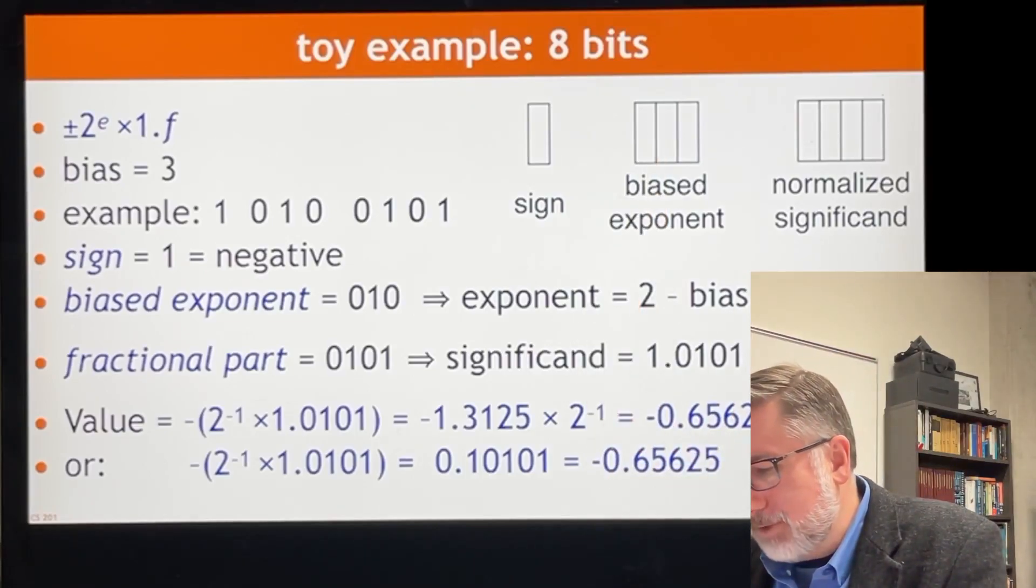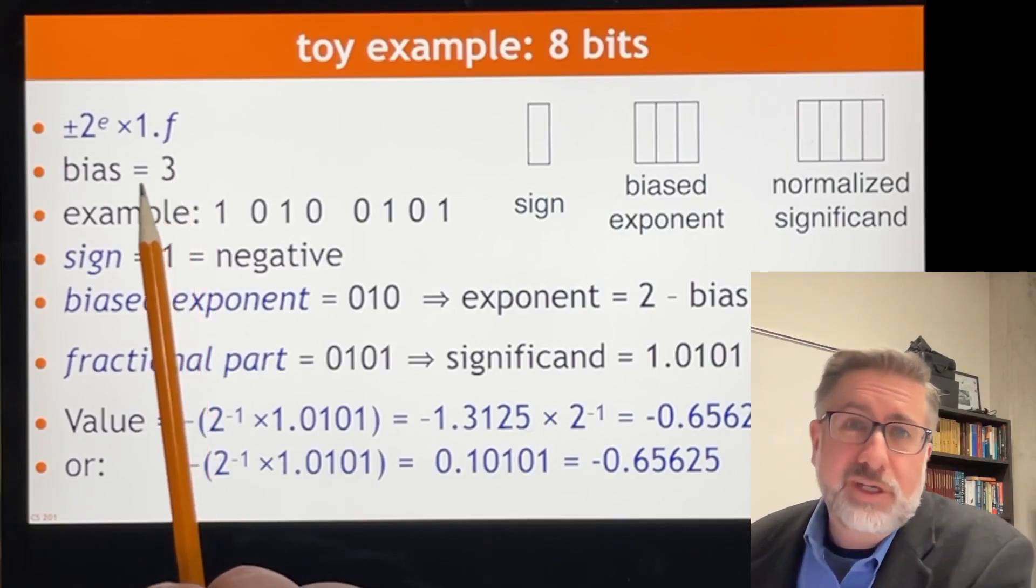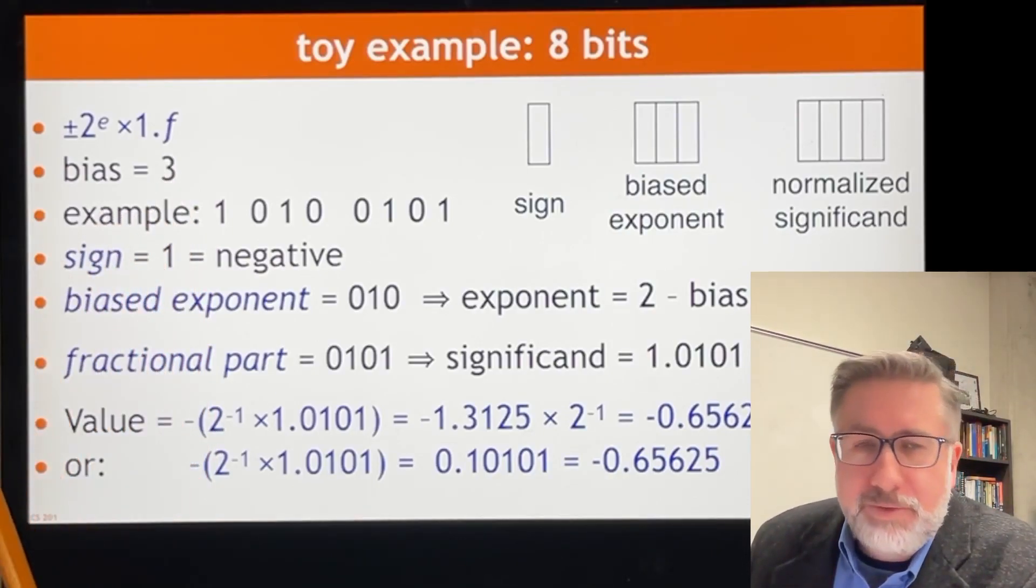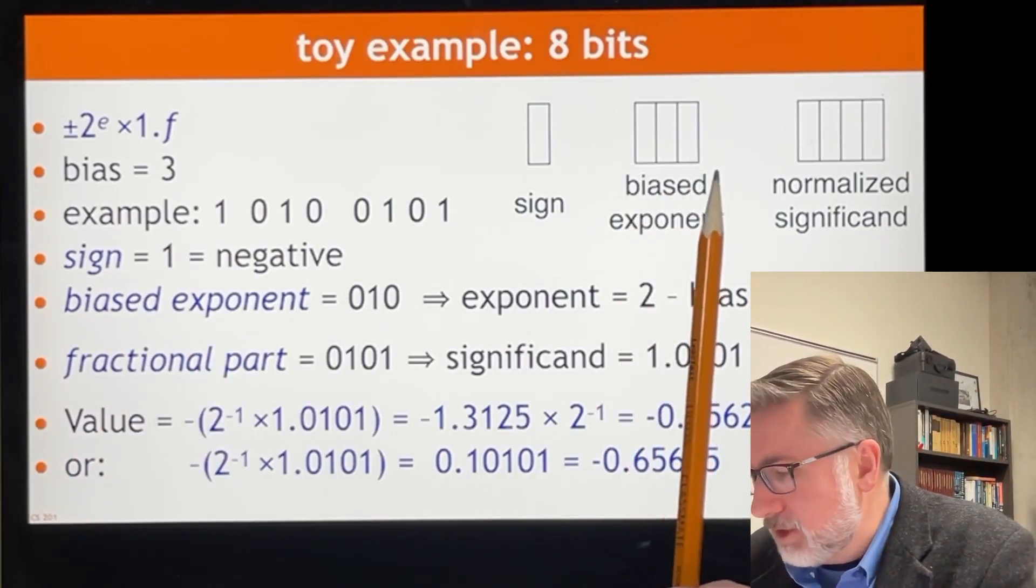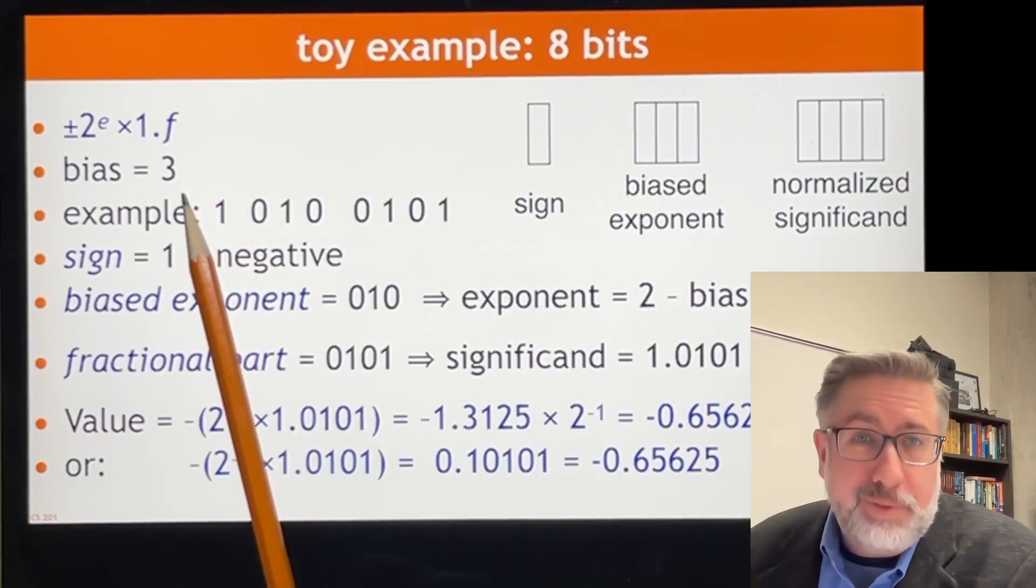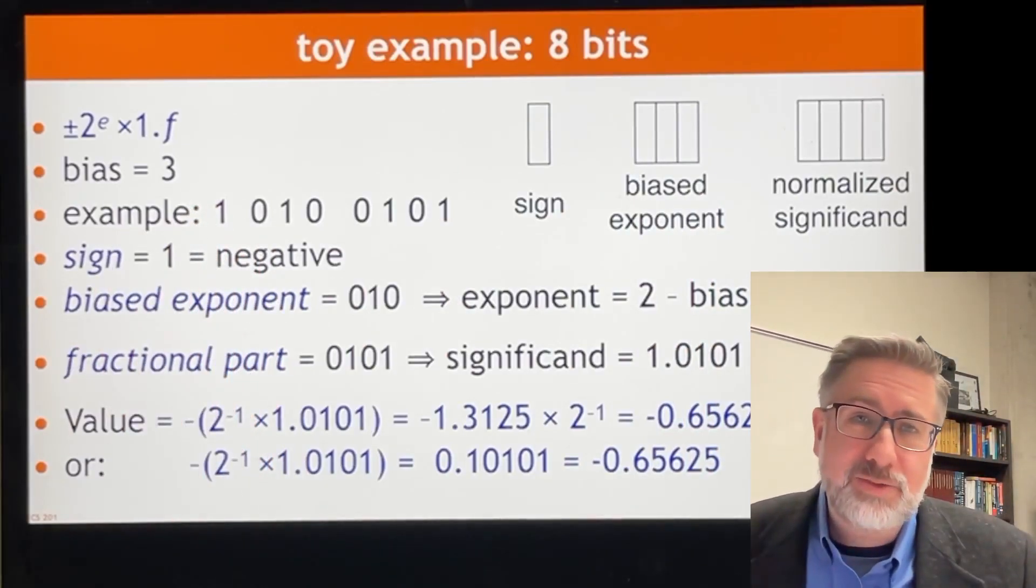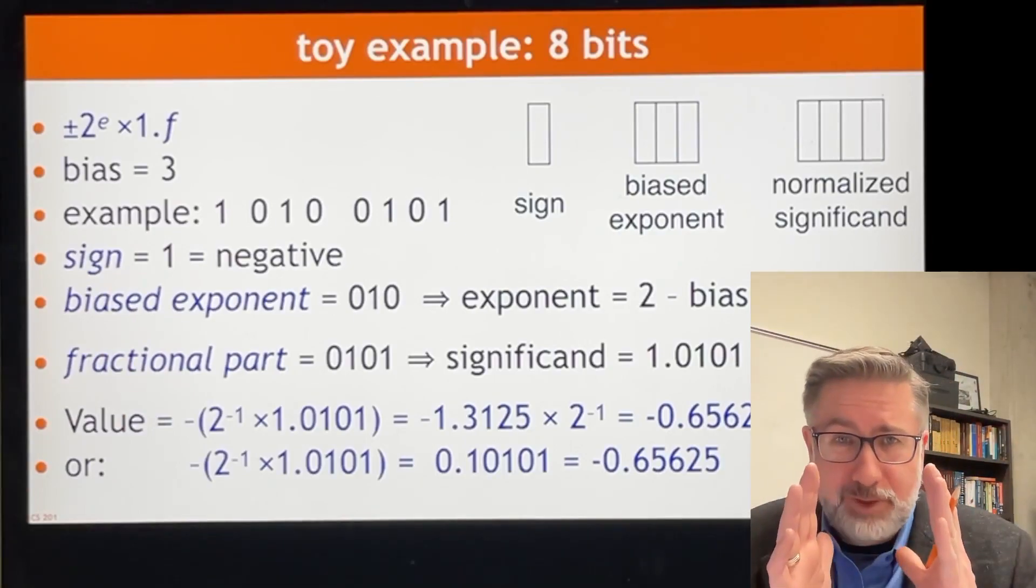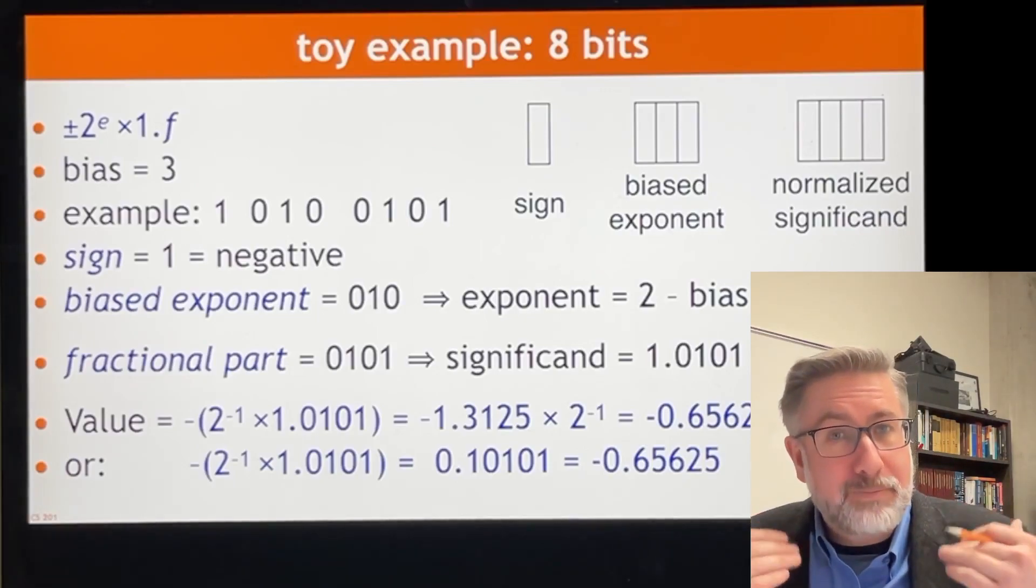So let's look at an example here. The bias in this case is 3. We're going to just say that. We'll just say the biased representation is going to be some number of bits of representation, and we're going to say that the bias is 3. So if a number is between 0 and 7, we subtract the bias, which means it's now between negative 3 and positive 4. We take whatever number it is, we subtract off the bias, and we get the number that that represents.